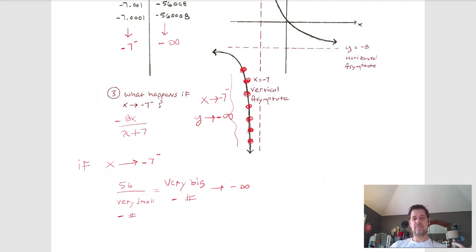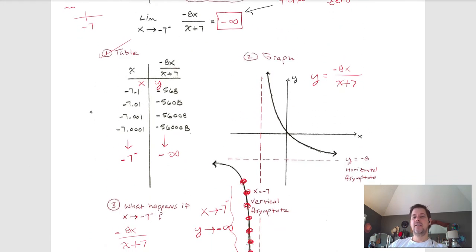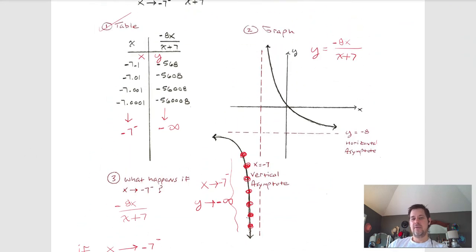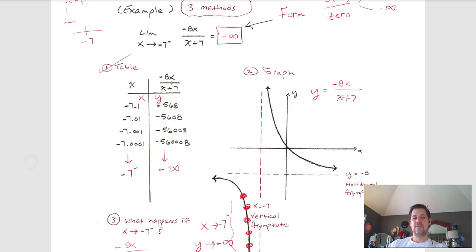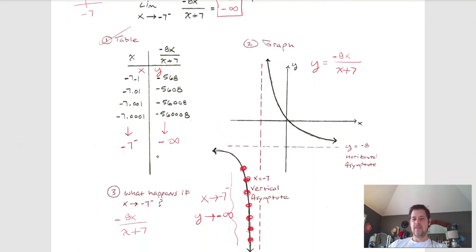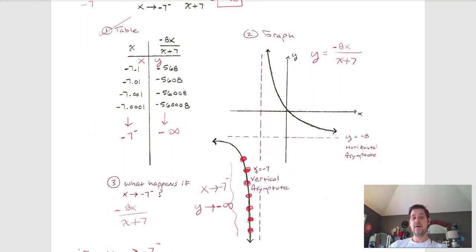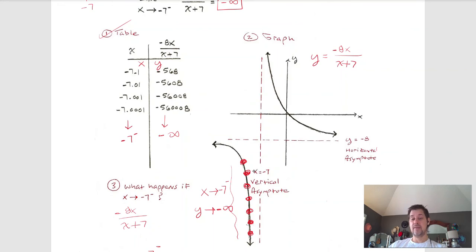This third method requires reasoning: dividing by a small number gives a big number, and dividing a positive by a negative gives a negative. It takes some comfort with arithmetic, but it's the fastest method. Ultimately it doesn't matter which method you use — the table, the graph, or the mental reasoning. I wanted to expose you to all three and let you decide.